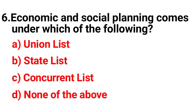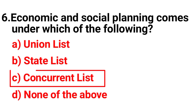Question 6. Economic and social planning comes under which of the following? Option A: Union list. Option B: State list. Option C: Concurrent list. Option D: None of the above. The correct answer is Option C, Concurrent list.